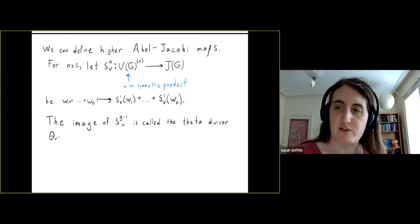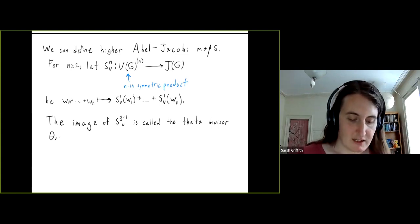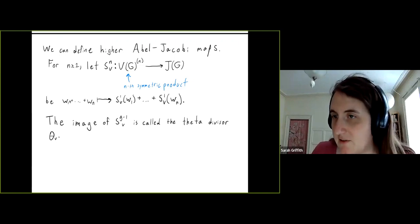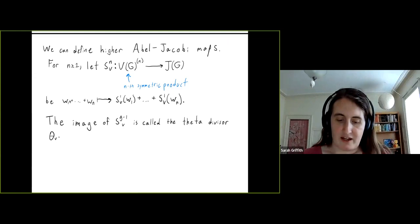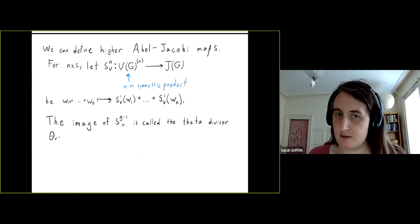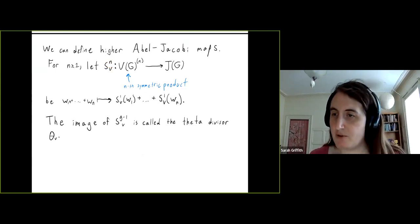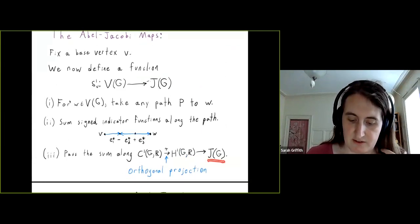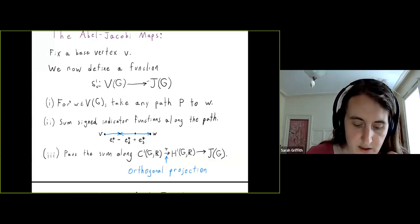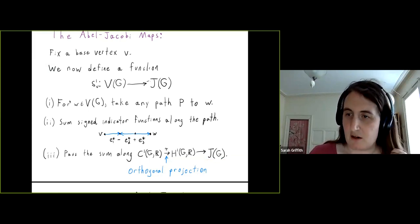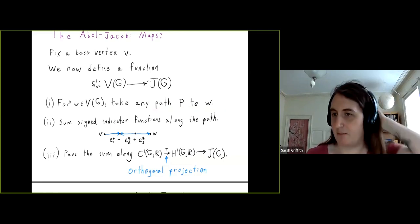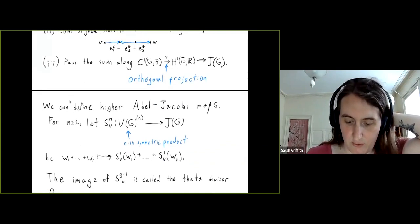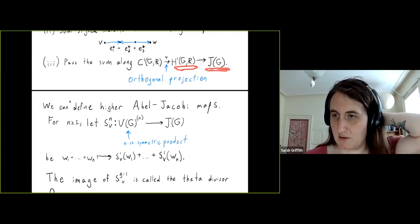Once we have the first Abel-Jacobi map, we can define higher ones. The nth Abel-Jacobi map takes the nth symmetric product of the vertices — collections of n vertices, not all necessarily distinct — and applies the first Abel-Jacobi map to them individually. The fact that this is well-defined requires checking because there was a choice of path, but the quotient defining the Jacobian ensures everything works out only after passing to the Jacobian.